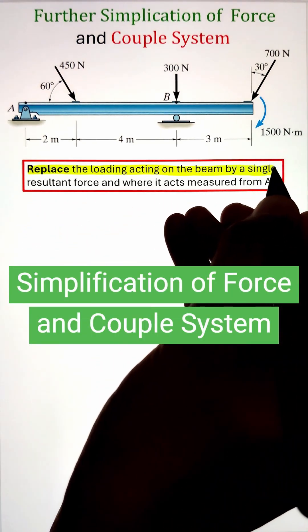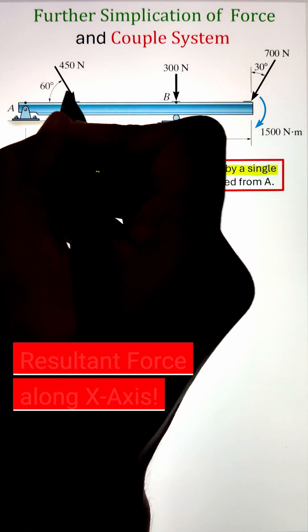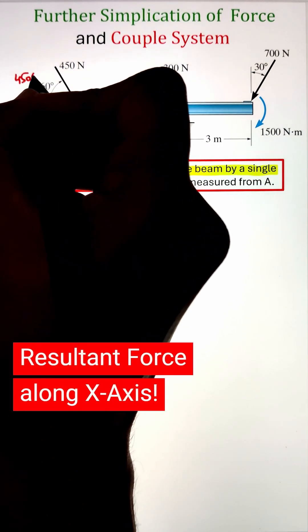In order to replace the loading acting on a beam by a single resultant force and to figure out its location with respect to point A, we can start by first figuring out the resultant force's component along the x and y direction.